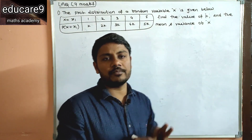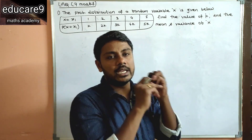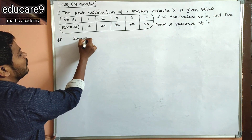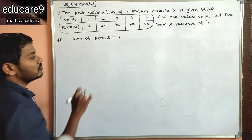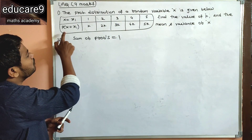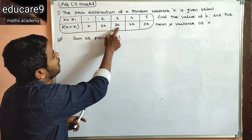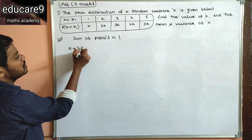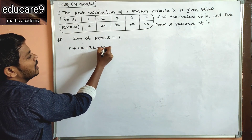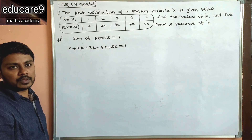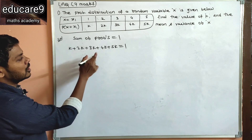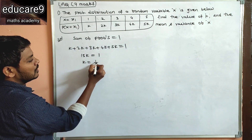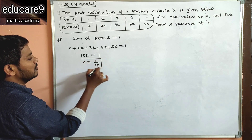These are all problems based on three formulas: first, the sum of probabilities equals 1; second, the mean formula; third, the variance formula. First, we know that the sum of all probabilities equals 1. The probability values are K, 2K, 3K, 4K, 5K. Adding all these K terms gives 15K, which equals 1.